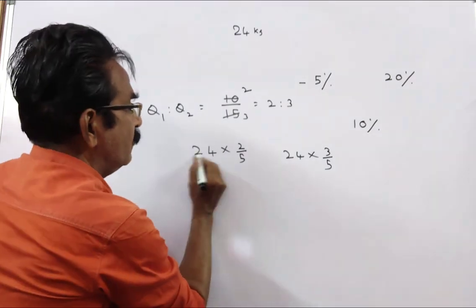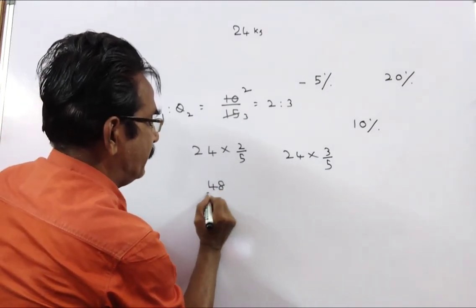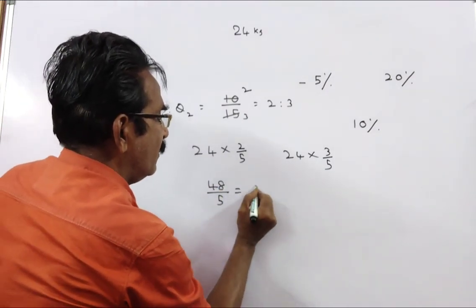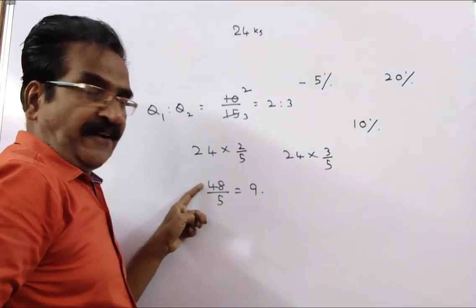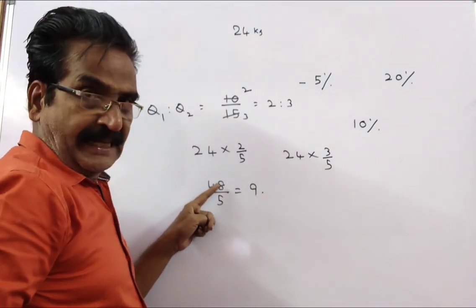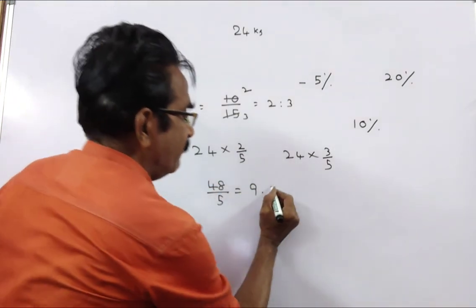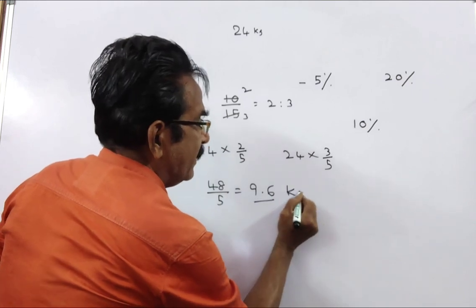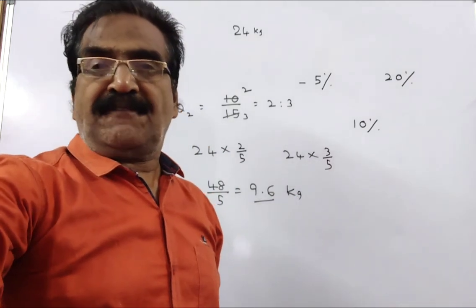We want the quantity sold at loss: 24 × 2/5 = 48/5. Dividing: 5 nines are 45, remainder 3, giving 9.6 kg. So the answer is 9.6 kg.